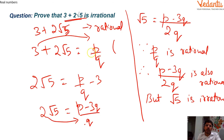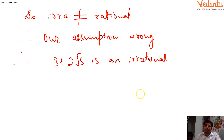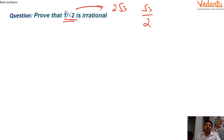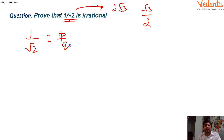Note: in these types of questions you do not need to separately prove √5 is irrational — just state that it is. Moving on: prove that 1/√2 is irrational. This method also applies to expressions like 2√3, √3/2, etc. Assume 1/√2 is rational, so write 1/√2 = p/q, where p and q are co-prime integers and q ≠ 0.